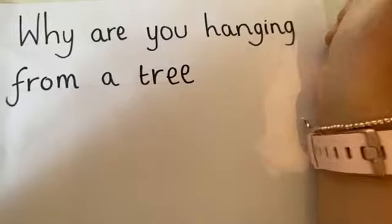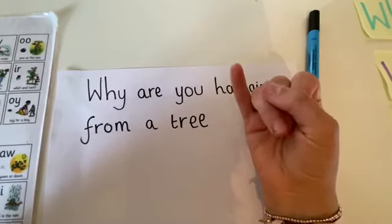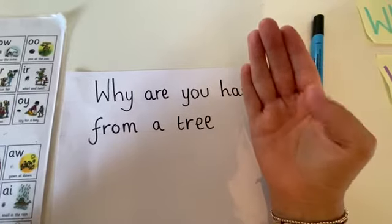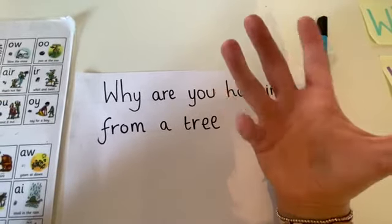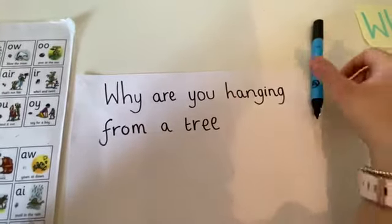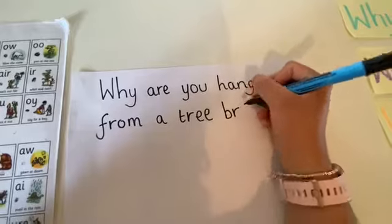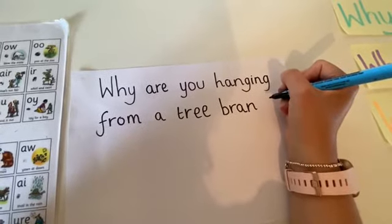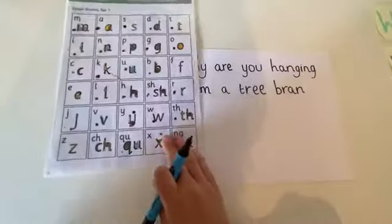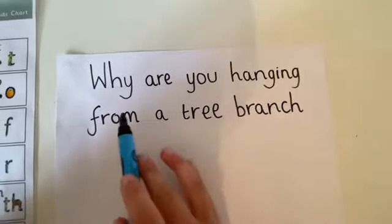Branch. Let's use our thread fingers to look at how many we need for branch. B, r, a, n, ch. Five thread fingers. There's five sounds in my word branch. The first one would be b, branch. R, a, n, ch. My ch sound uses the c and h letters.